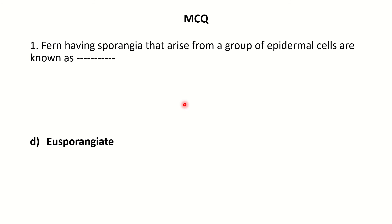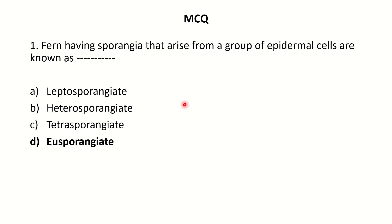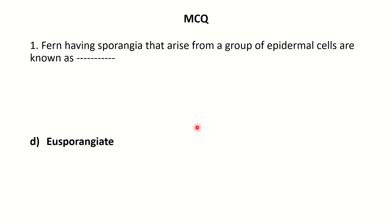Next, some multiple choice questions. Ferns having sporangia that arise from a group of epidermal cells are known as eusporangiate, while those from a single cell are leptosporangiate. These questions are for self-testing — try to solve them without looking at the highlighted answers so you can self-evaluate how much you have learned and retained.